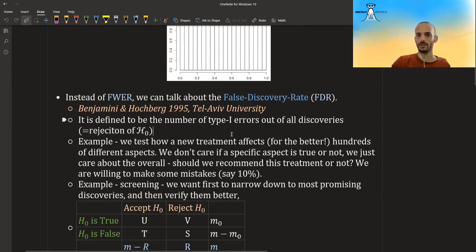But why would we want to care about the false discovery rate instead of like the probability of making even one error? One example is that we test how a new treatment affects, for the better, hundreds of different aspects. So it can maybe improve your blood pressure or improve your metabolism. I don't know. It has a lot of effects. So we don't care if a specific aspect is true or not. So we don't care about the specific aspect, if it's really improving your heart or not, if it's really improving your eyes or not. What we care about is the overall.